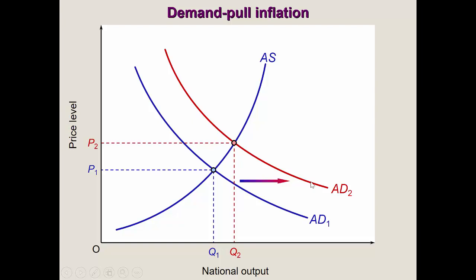The aggregate demand curve only doesn't shift when prices change — when prices change, the quantity of national output changes along the curve. But if one of the components of AD changes, we see an outward shift. If there is a positive change in any of these four components, the aggregate demand curve shifts to the right, and that leads to a rise in prices across the whole economy.